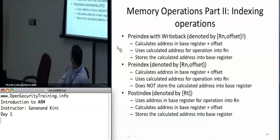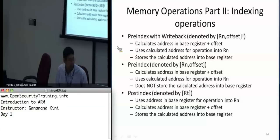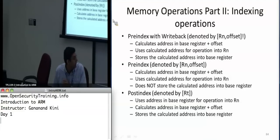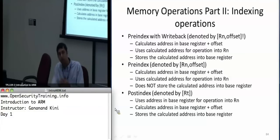Similarly, there's something called post-indexing. It calculates the address followed by an offset, but you specify the offset outside the square brackets. It stores the calculated address back into the register — similar to pre-indexed with writeback. The only difference is the offset is placed outside and there is no exclamation point.